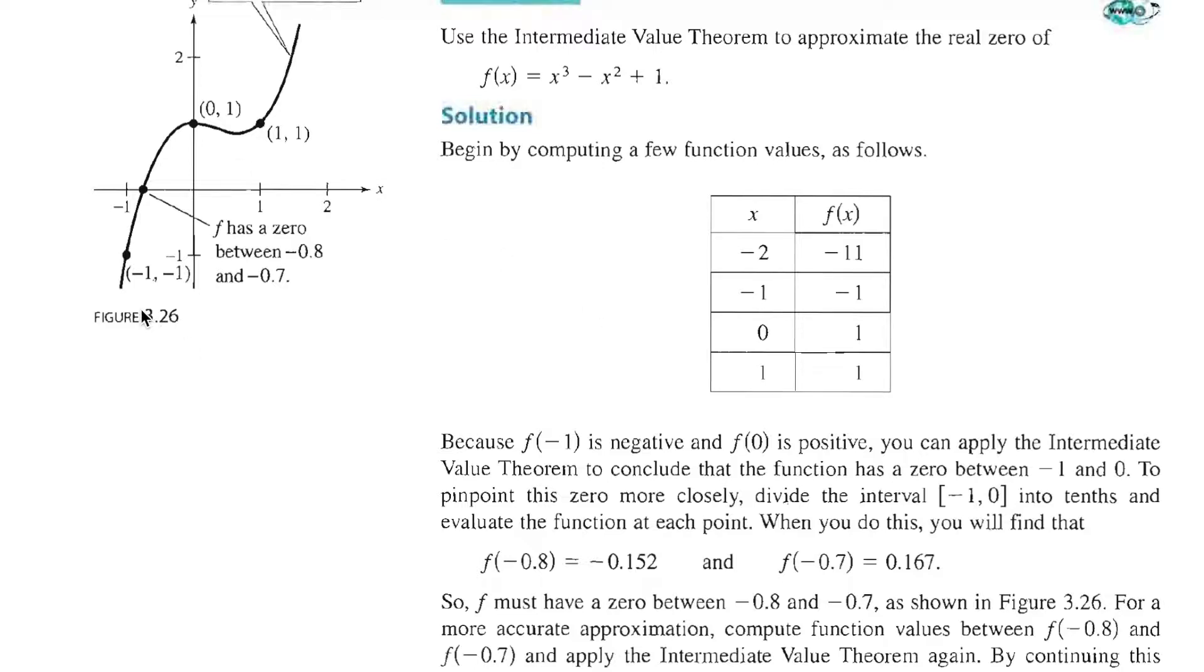If you look at the picture of the graph, you'll see that we actually cross a zero right here, and it happens somewhere between when x equals negative 1 and x equals 0.